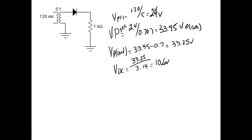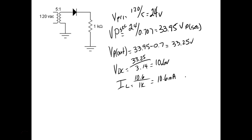What else do we need to calculate? My I_L would be equal to 10.6 divided by 1K — now we're into DC. Which gives us what? A milliamp. Power — we could use two formulas. We could use I squared R, we could use V squared over R, we could use I times V. So P of the load would be equal to 10.6 milli times 10.6.